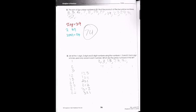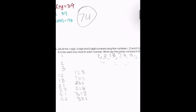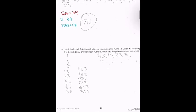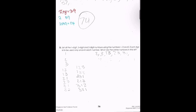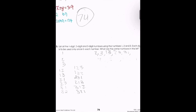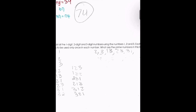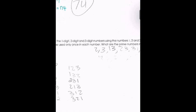Problem 3 says: list all the one-digit, two-digit, and three-digit numbers using the digits 1, 2, and 3, where each digit is used only once. What are the prime numbers in the list?